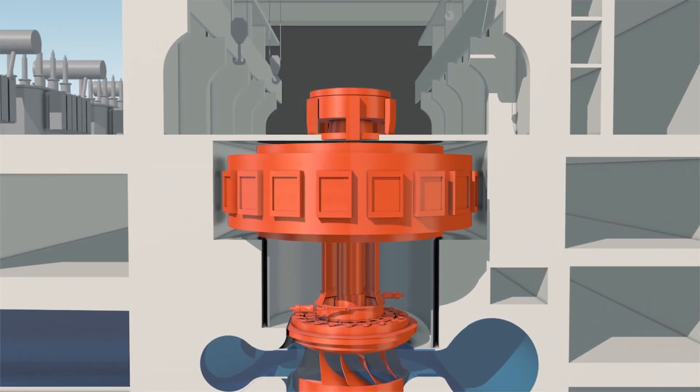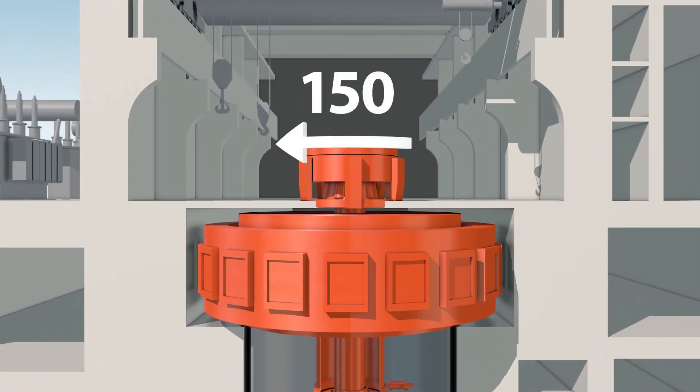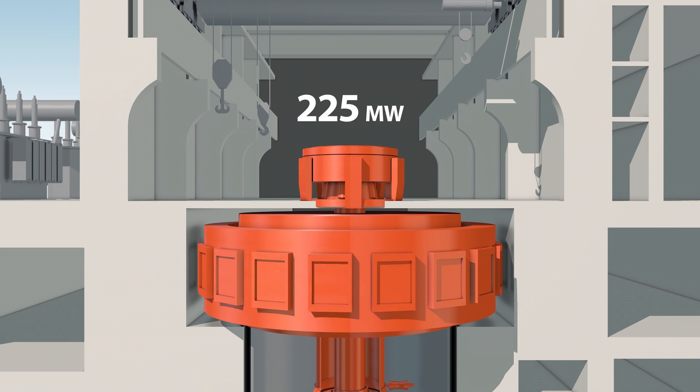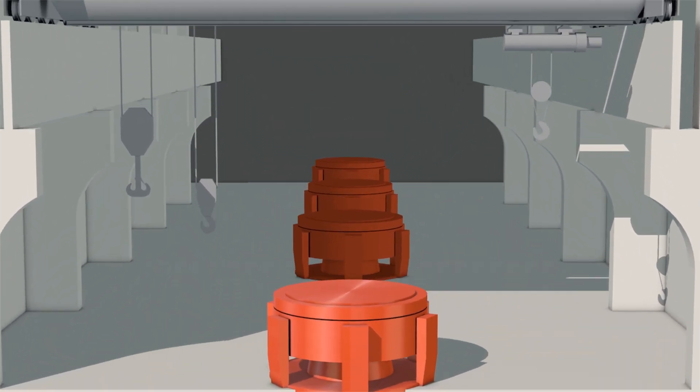The hydro units can rotate as fast as 150 revolutions per minute and have the capacity to produce up to 225 megawatts in generation mode. The combined maximum capacity of the four hydro units is 900 megawatts.